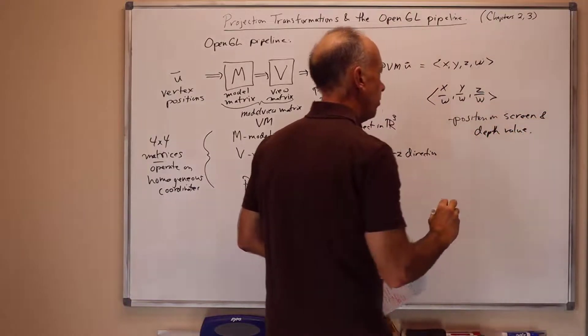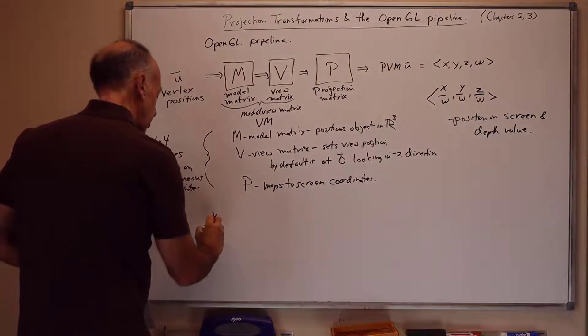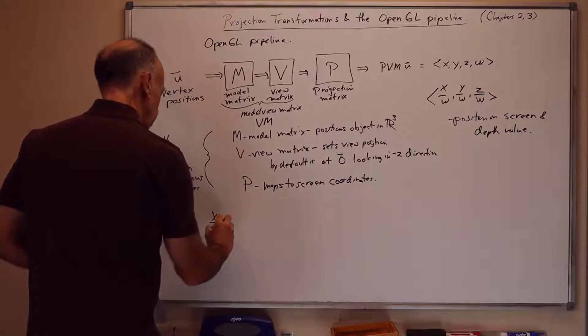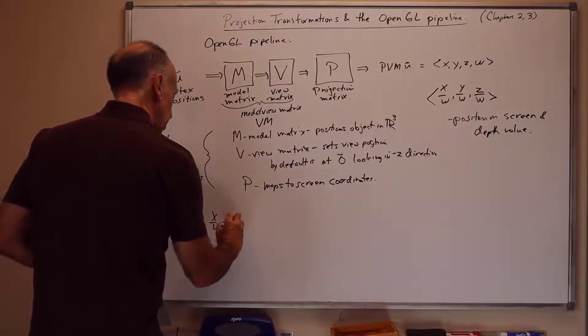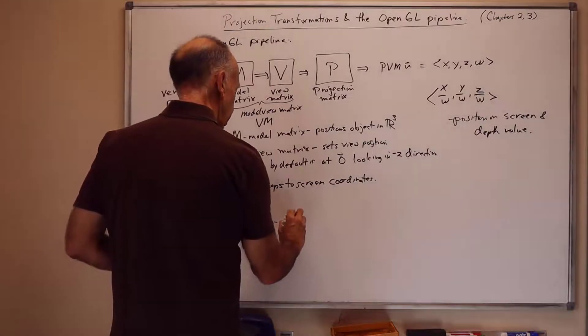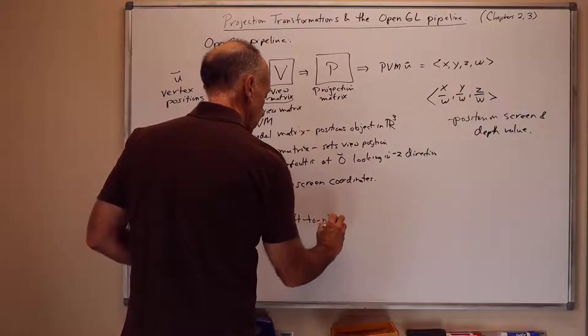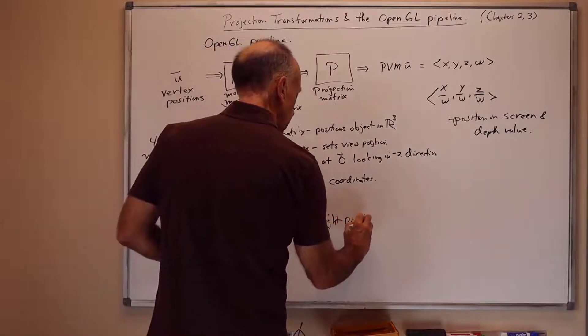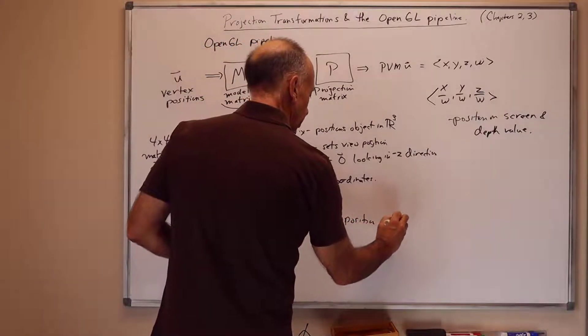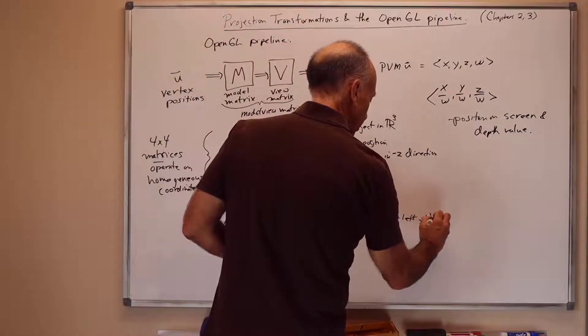So the first two coordinates, x over w and y over w, are the position on the screen. So x over w is in the interval minus 1 to 1, and this gives the left to right position on the screen. So minus 1 is on the left side of the screen, plus 1 is on the right side.